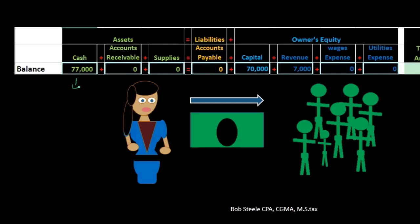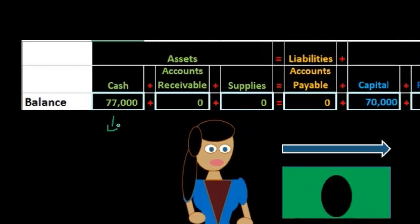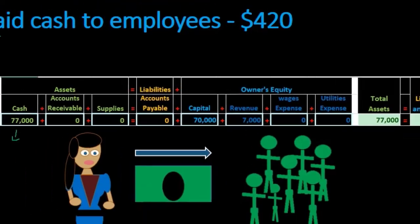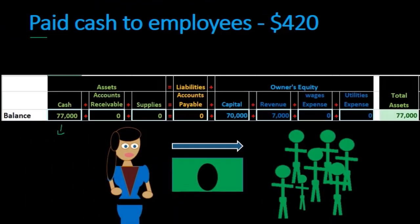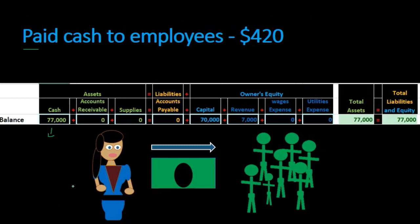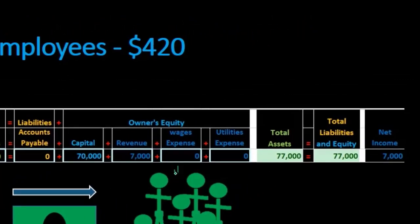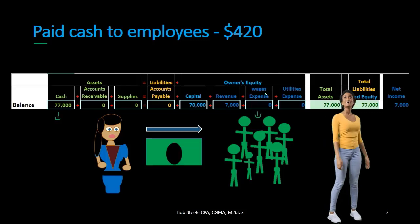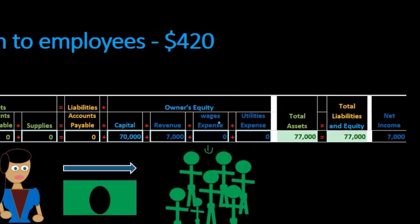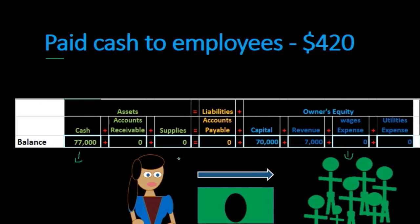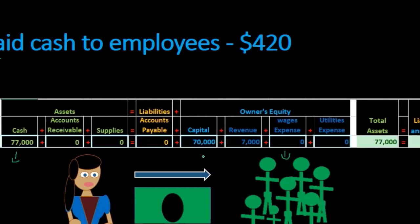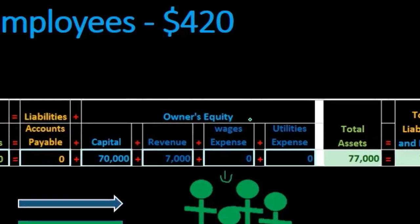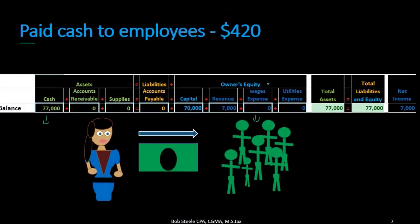We need to know what other account is affected when we pay employees. We are always recording transactions from the perspective of the business owner. Therefore, we have a wages expense. We focus on cash first — if cash went down on the assets side, then the other side must also be going down, meaning it's bringing down total equity.